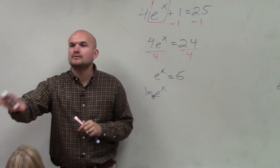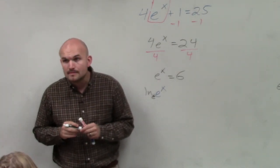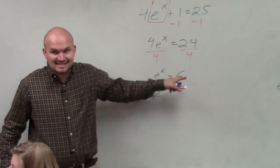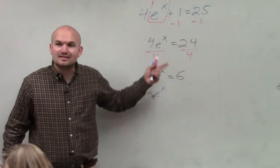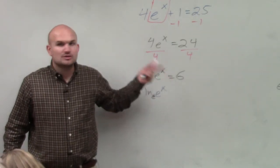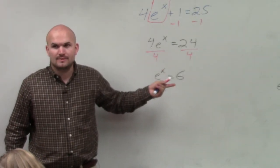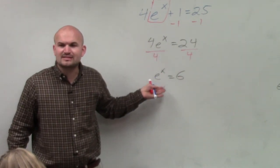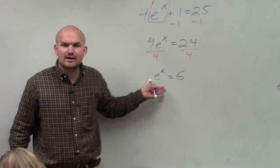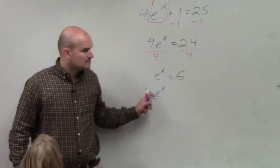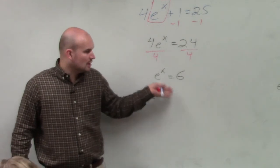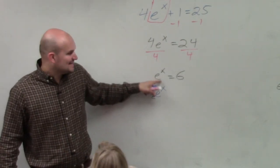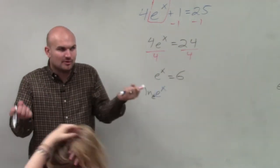Hold on — but remember, you have e and 6. They have to be exactly the same to use the one-to-one property. So you can't use the one-to-one property, because e and 6 are not going to be the same. So you have to use our rules of logarithms, meaning I have to get rid of this e, because I can't raise e to a power and 6 to a power where they're both going to be the same.